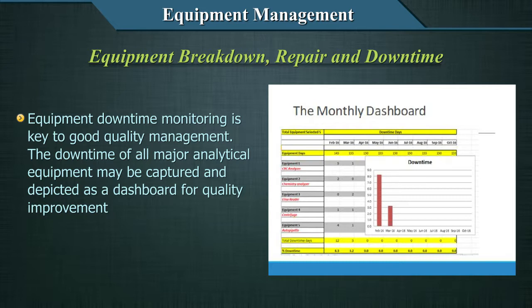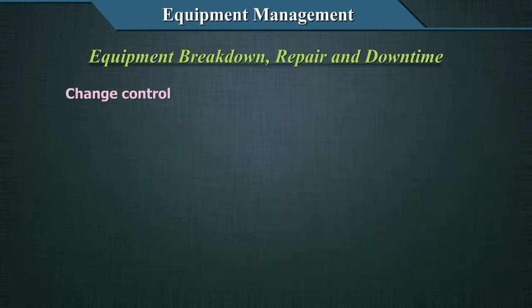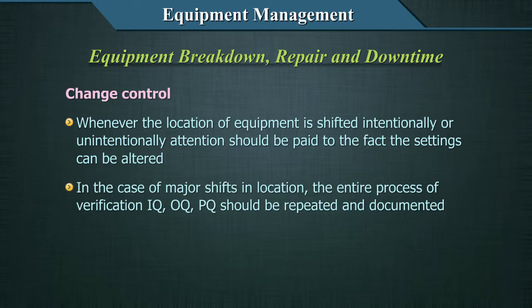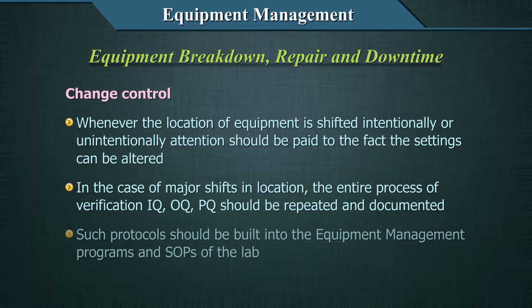Another concept in equipment management is change control. Whenever the location of equipment is shifted intentionally or unintentionally, attention should be paid to the fact that the settings can be altered. In the case of major shifts in location, the entire process of verification — IQ, OQ, and PQ — should be repeated and documented. Such protocols should be built into the equipment management programs and SOPs of the lab.